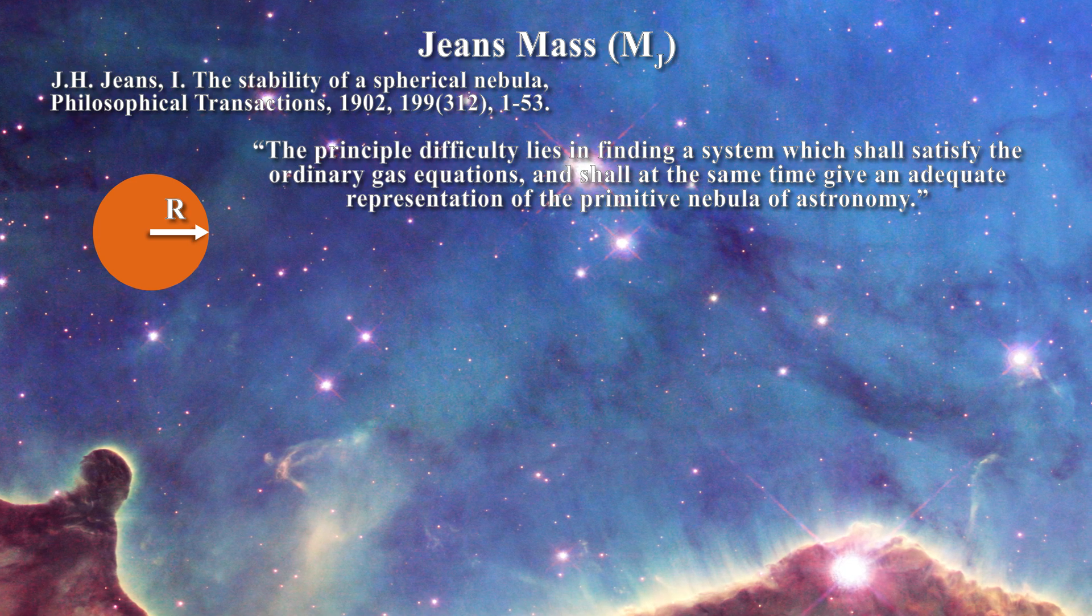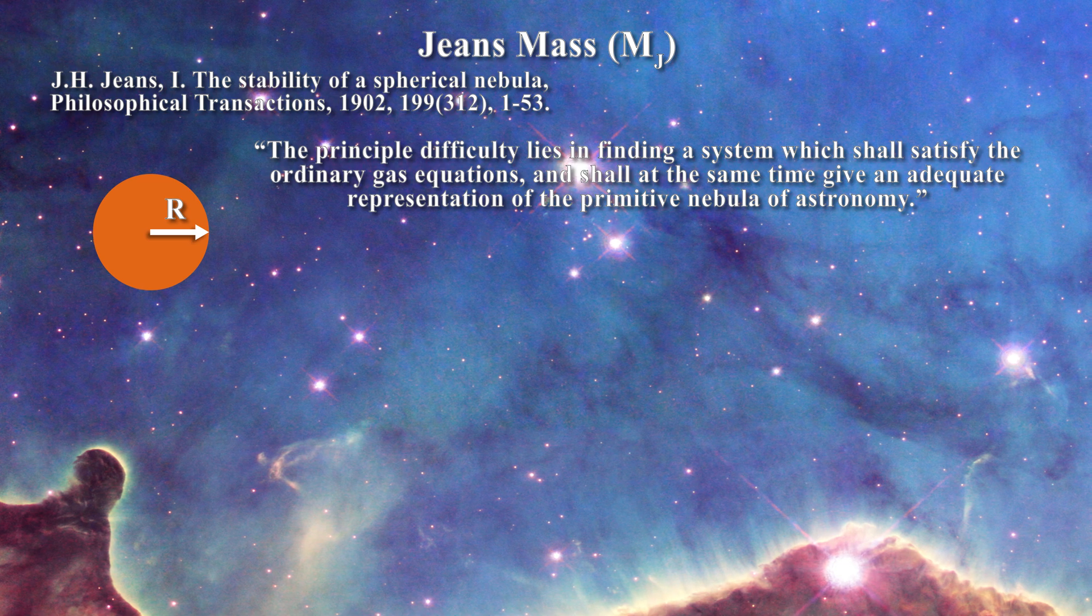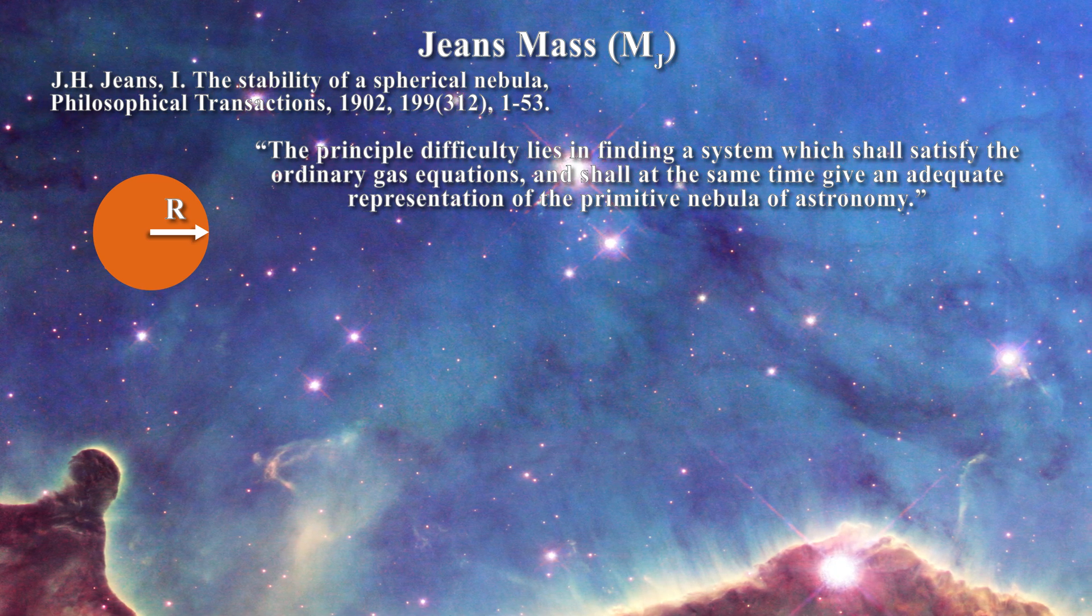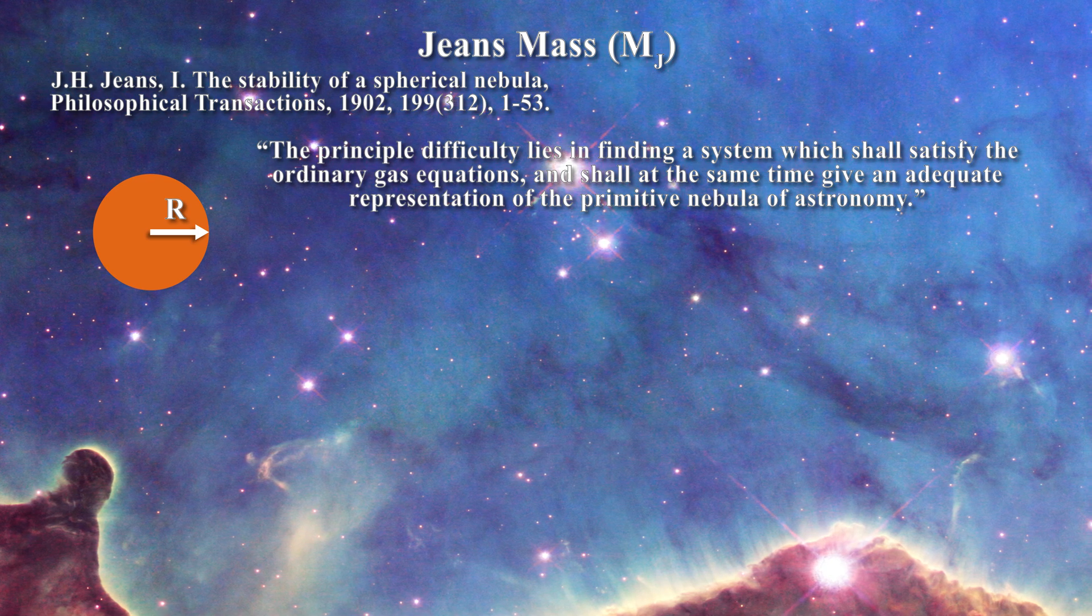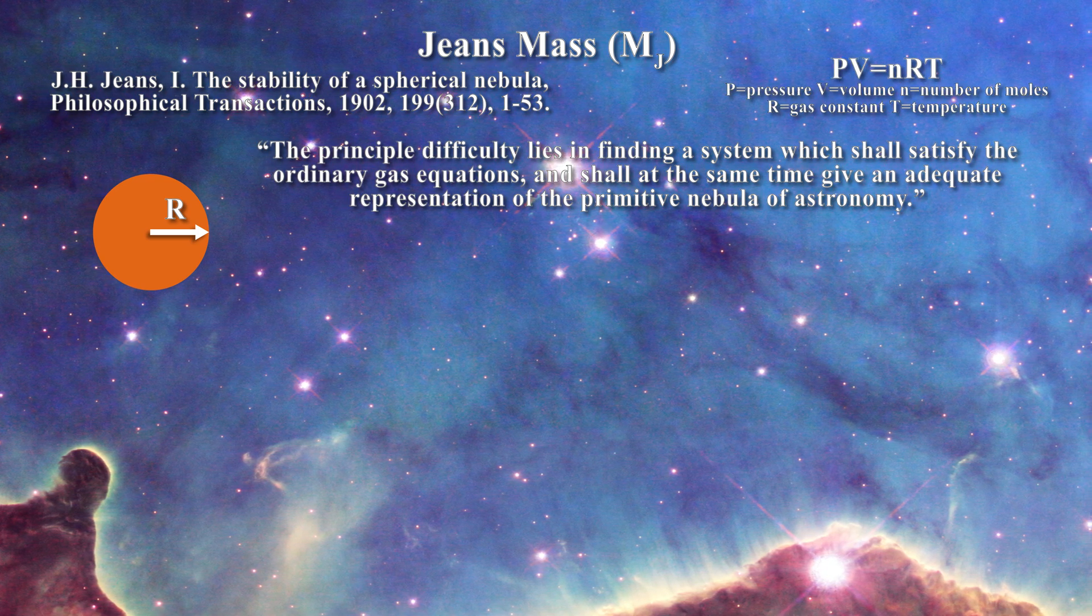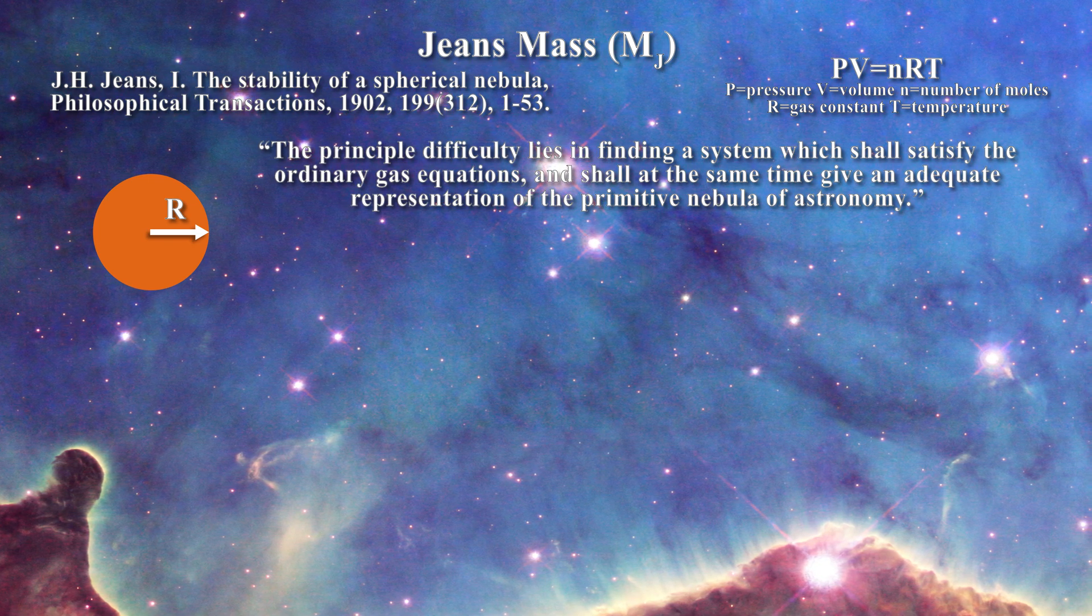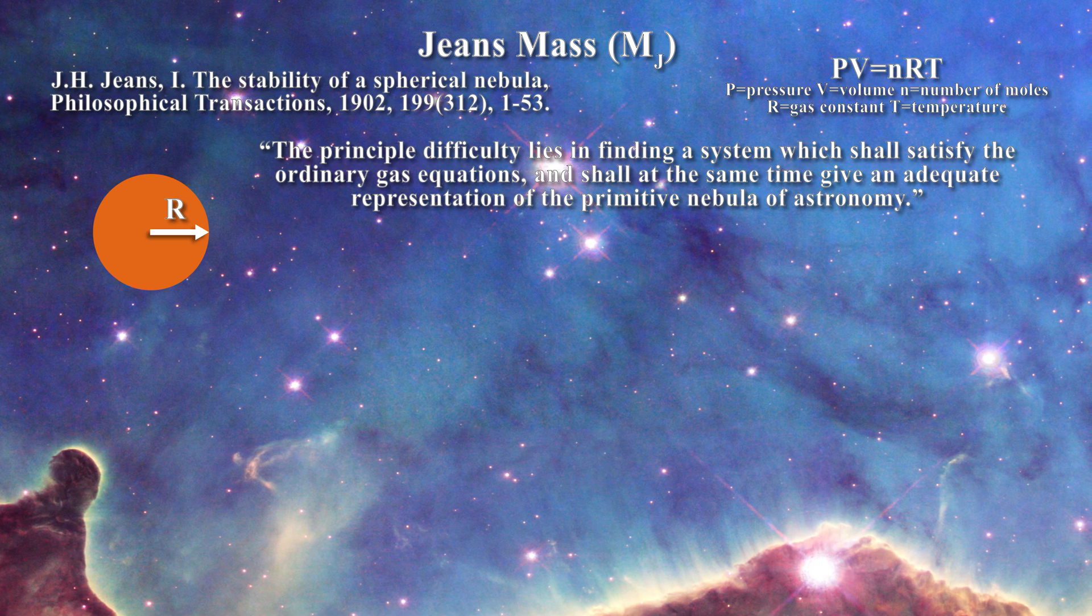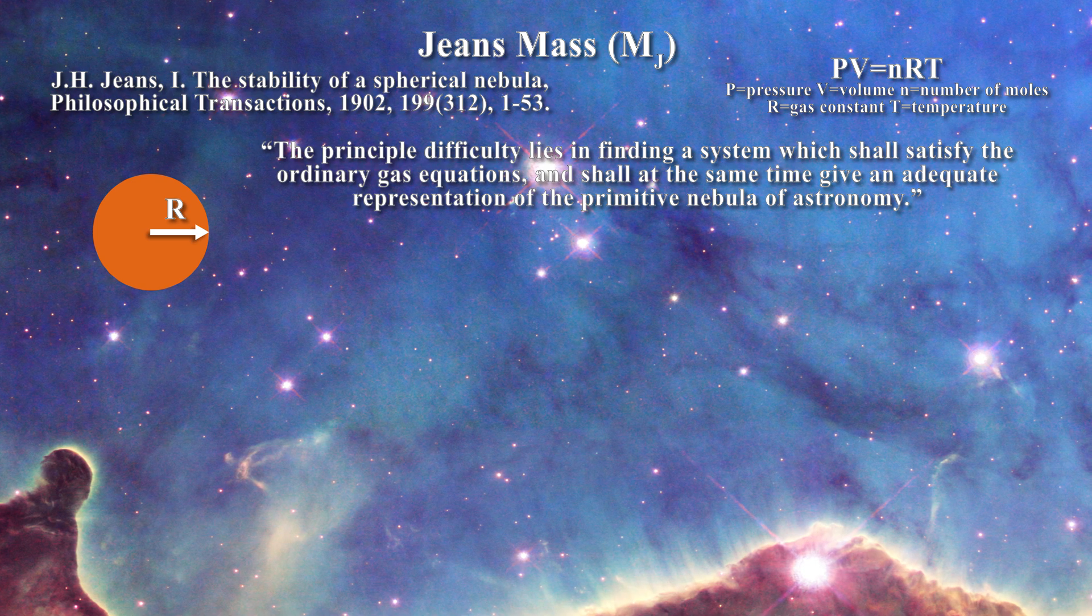Jeans recognized this and wrote: the principal difficulty lies in finding a system which shall satisfy the ordinary gas equations and shall at the same time give an adequate representation of the primitive nebula of astronomy. Of course the ordinary gas equation PV equals nRT was defined using containers with real surfaces. That is how one can speak of pressure in that gas. In kinetic theory, pressure is generated at the walls of the container.